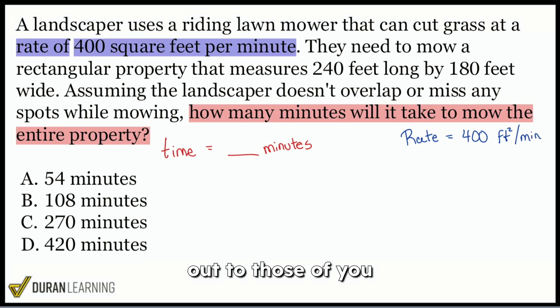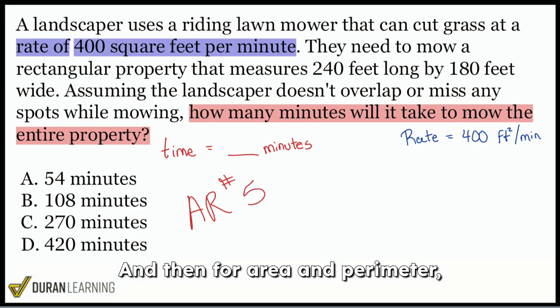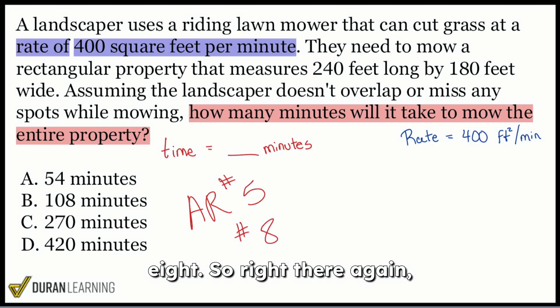So this is just a quick shout out to those of you in my program. If you're in my program, this will be arithmetic reasoning, unit number for distance rate time, five. And then for area and perimeter, that's going to be unit number eight. So right there, again, for those of you in my program, arithmetic reasoning, unit number five, and unit number eight, that's where we cover each of those topics individually.